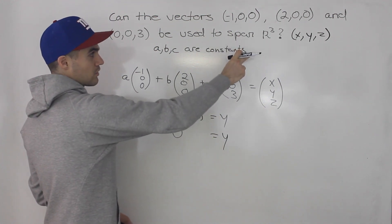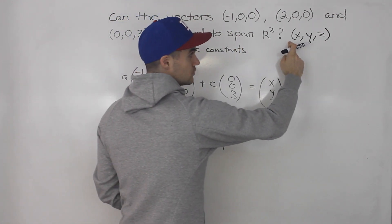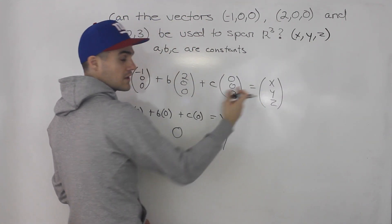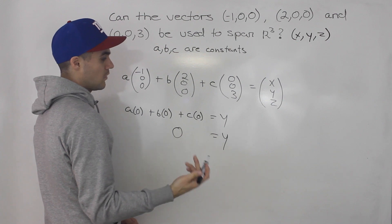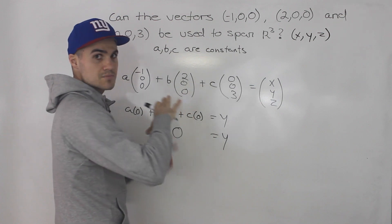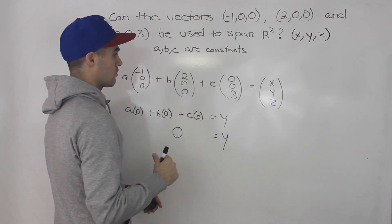And that means that our y value for this vector always has to be zero. But in order to span R³, we have to be able to get any vector here. So we should be able to pick any y value that we want. And the fact that y always has to be zero means that it's not going to span all of R³.